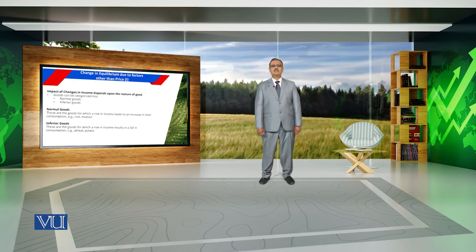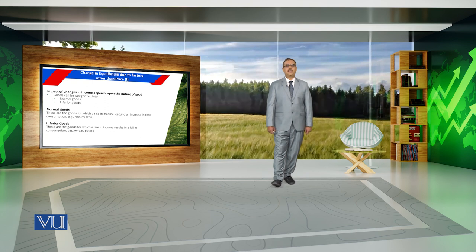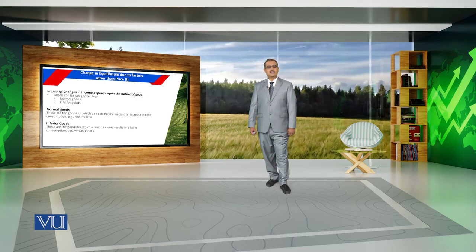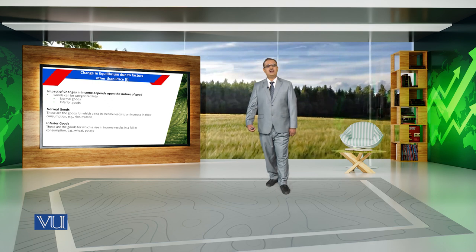When we discuss the impact of income on equilibrium, it depends upon the nature of goods. In economics, we usually categorize goods under normal goods and inferior goods. When a commodity is a normal good, these are goods for which a rise in income leads to an increase in consumption of that commodity. For example, if rice is a normal commodity, then if income of the household increases, consumption of rice will increase.